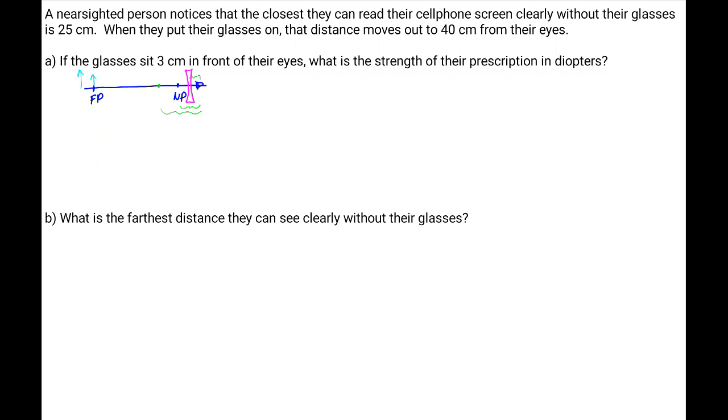The other thing that we have to realize is that we're bringing an object that starts on the left through the glasses forming an image on the left on the same side as the object, which means that the image distance will be negative. So the image distance with the glasses is going to be negative 25 minus 3 or negative 22 centimeters. Then the object distance through the glasses was the 40 centimeters, but we have to take away the three centimeters from the eye and that will be 37 centimeters.